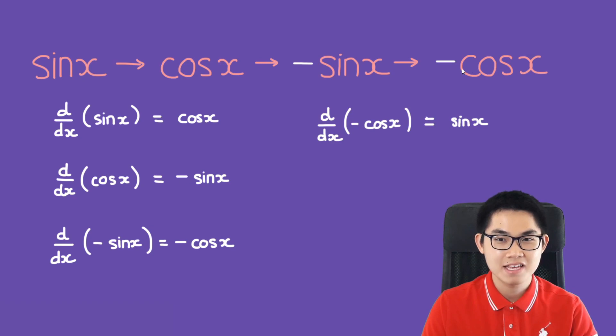And finally, the derivative of negative cosine of x, we just loop all the way around again, and we get sine of x. And the crazy thing about this is that it doesn't just tell you the derivative, it also tells you the anti-derivative.